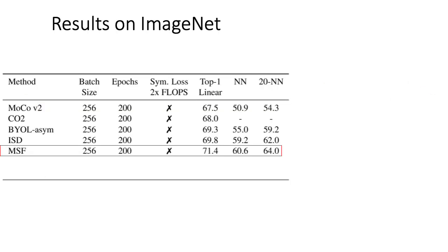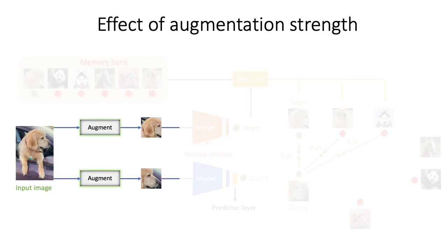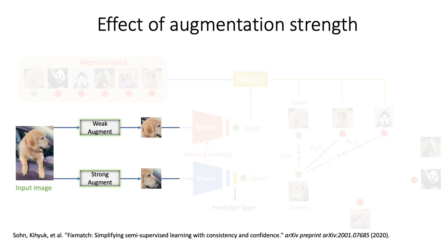Let us now take a look at the results on the ImageNet dataset. We use a ResNet-50 model in all our experiments. For a fair comparison, we keep batch size, epochs, etc., the same between ours and other SOTA methods, and find that our method performs better given a similar computational budget. The standard approach uses the same strong augmentations for both views, involving aggressive operations like color jitter, grayscale, and blurring. When these strong augmentations are applied to the target view, the NNs can be semantically different, so we use a weaker augmentation for the target view to help find more semantically relevant neighbors.